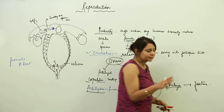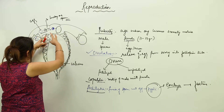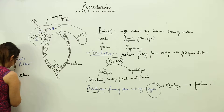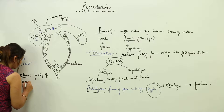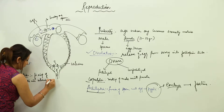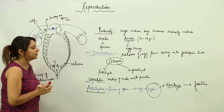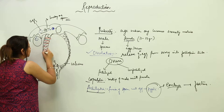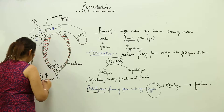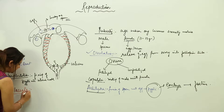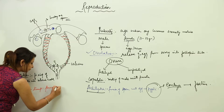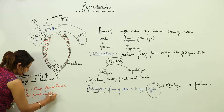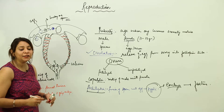The embryo starts moving and becoming bigger in size, and gets fixed in the uterine wall. This is called implantation — the fixing of the zygote into the uterine wall. After implantation, the embryo needs nutrition, which it will share from the mother. Temporary connections are developed between the mother and the embryo, and these are called the placenta.